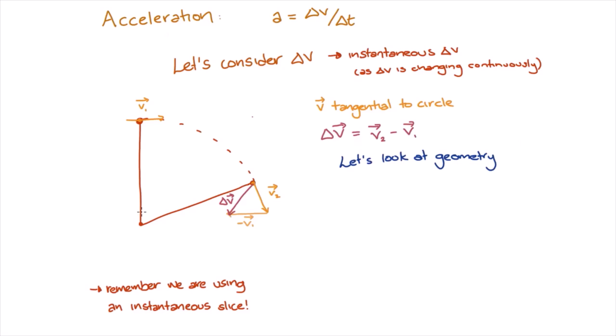We'll start by calling this angle theta. Now remember that theta is really small as we work this out. Now, we're going to use some geometry to get the angle between v2 and minus v1.